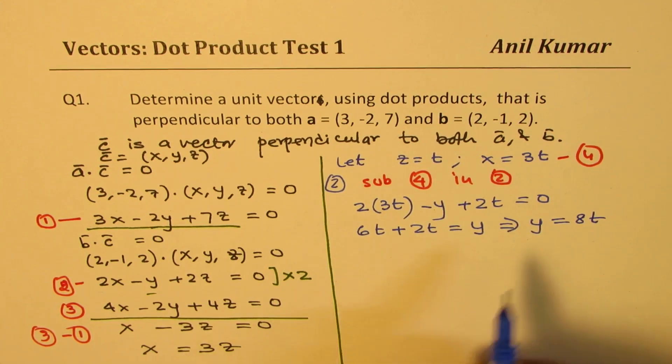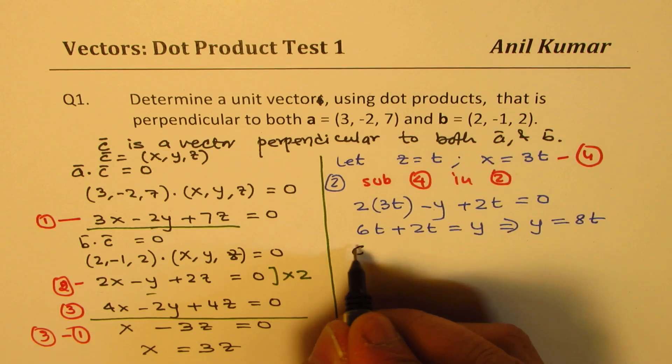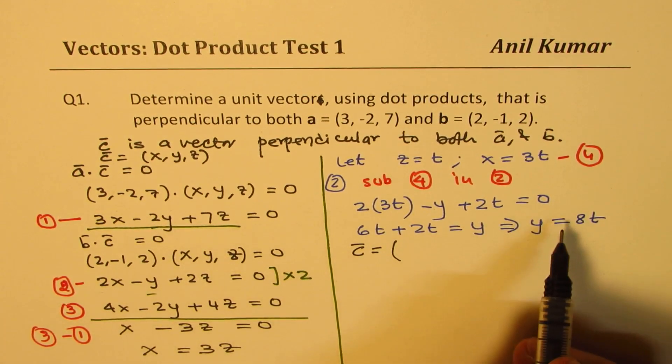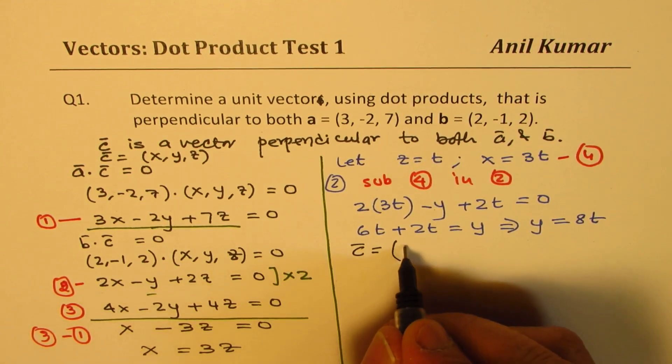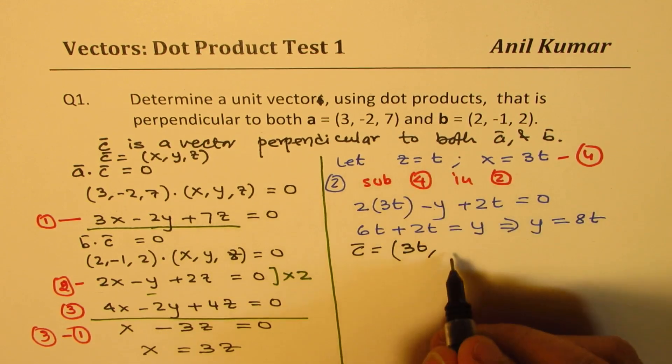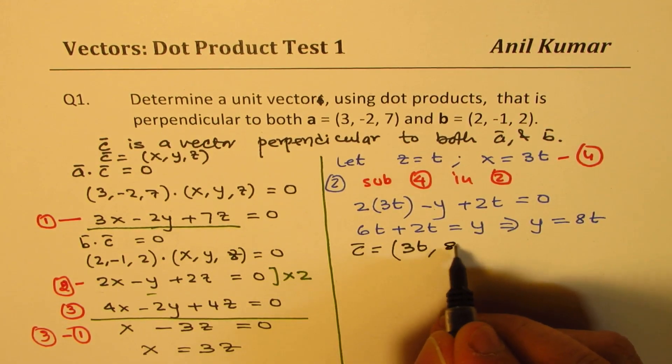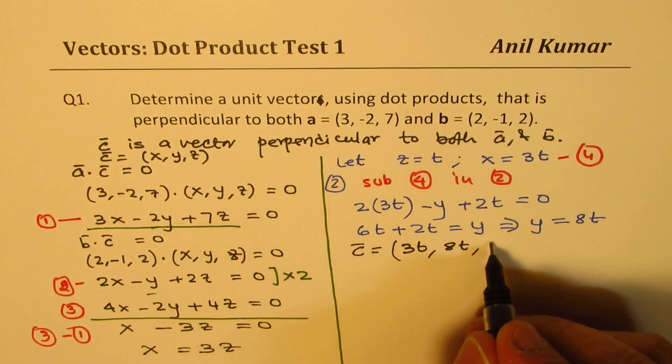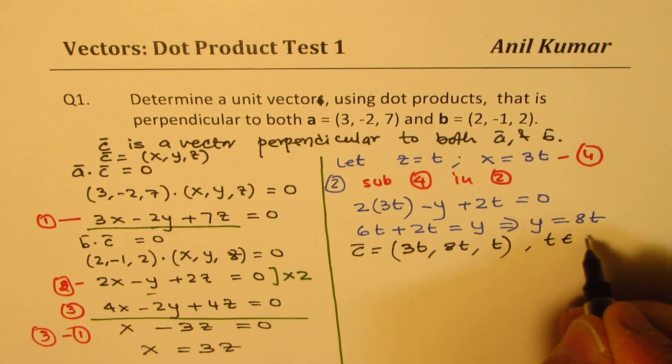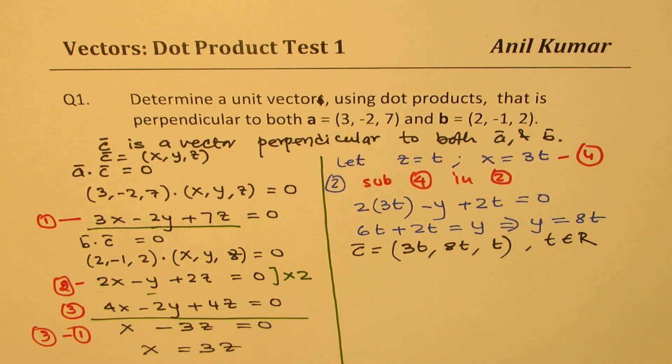Is that clear to you? So we get the value of y. So that means the vector c for us could be, in terms of our parameter t, it could be written as x is 3t, y is 8t, and z is t. So that becomes our vector which is perpendicular to both. t could be any real numbers, where t belongs to real numbers, any real number.